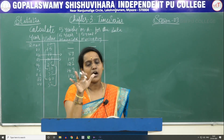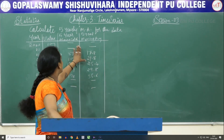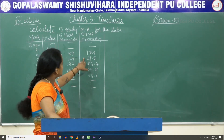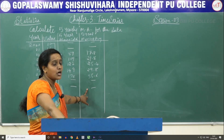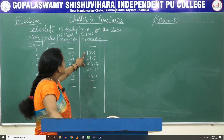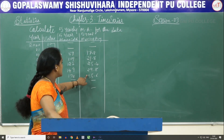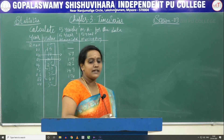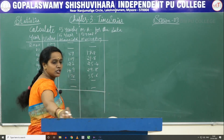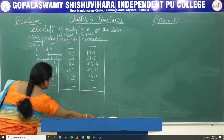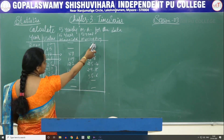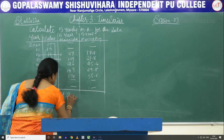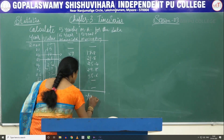In the exam, they will ask for 5-year or 4-year moving average for 5 marks: moving total carries 2 marks, moving average carries 2 marks, and conclusion carries 1 mark. The conclusion is based on the trend values — here the values are increasing: 17.8, 21.8, and so on — so the conclusion is: the given data shows an upward trend.